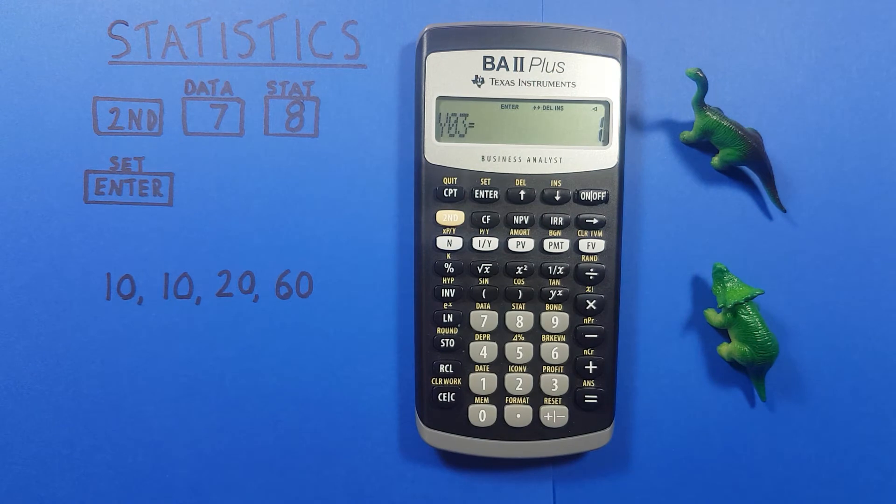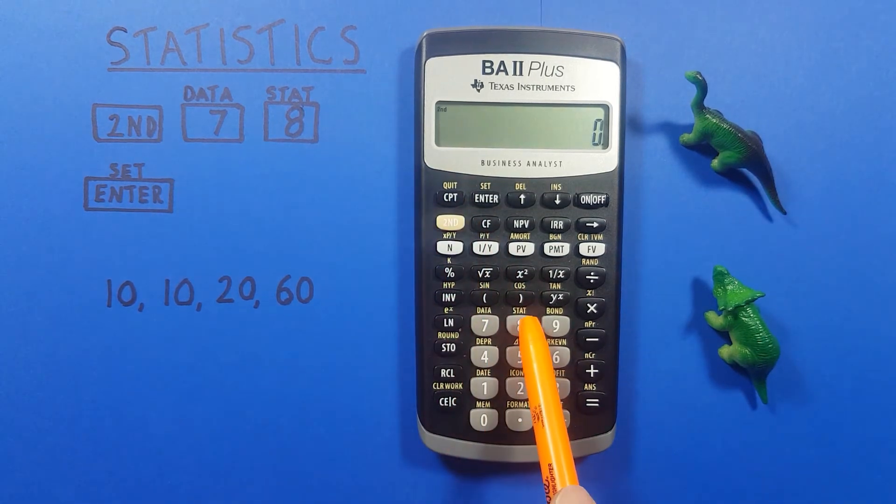All right our data set has been entered. We can now hit clear to go back to our main screen. We're now ready to calculate our stats and see what we get. So to do that we press second function eight.